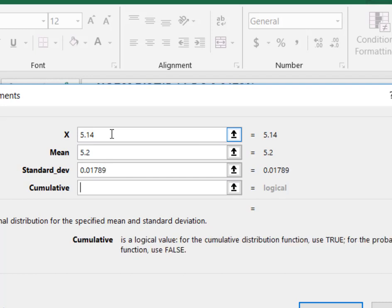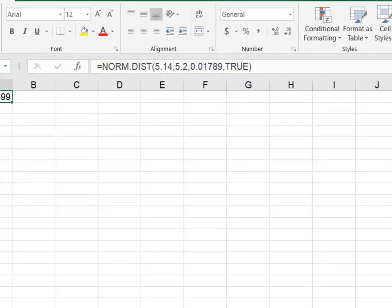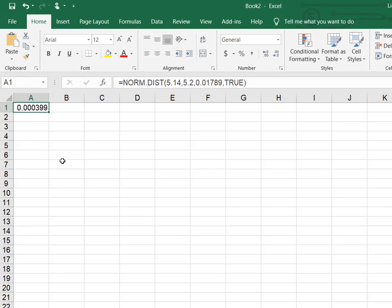Last but not least, it wants me to tell it, do you want this to be cumulative? Since we're solving for an area under the curve in a continuous distribution, we are going to tell them yes, that is true. You can see it's giving you the answer, the formula result in this function argument box, but if you click okay, it'll just dump that number for you into a cell, which is really helpful if you have other things to do with it.